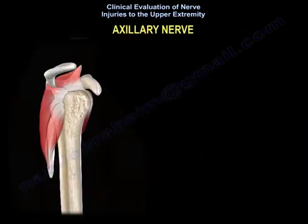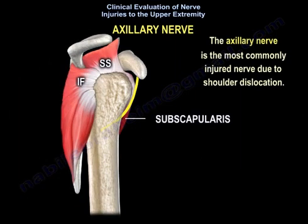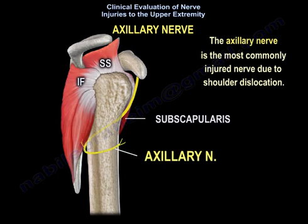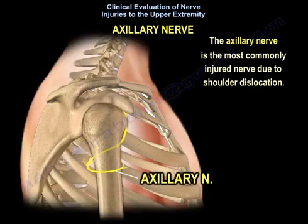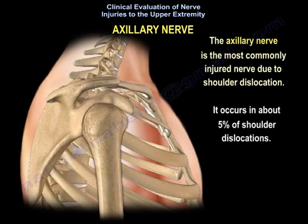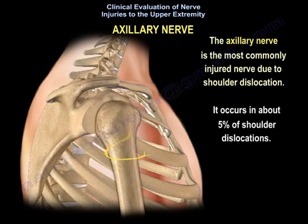The axillary nerve. The axillary nerve is the most commonly injured nerve due to shoulder dislocation. It occurs in about 5% of shoulder dislocations.